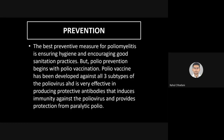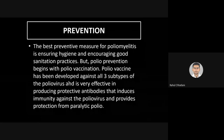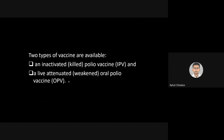Polio prevention begins with vaccination, as there is no treatment available. Polio vaccine has been developed against all three subtypes — PV1, PV2, and PV3 — and is very effective in producing protective antibodies. Two types of vaccine are available: IPV (Inactivated Polio Vaccine), where the killed virus is introduced into the body to stimulate antibody production; and OPV (Oral Polio Vaccine), which is a live but attenuated — weakened — virus.